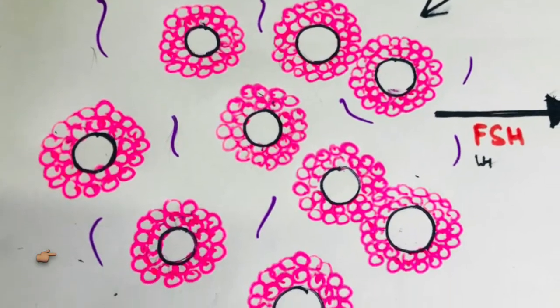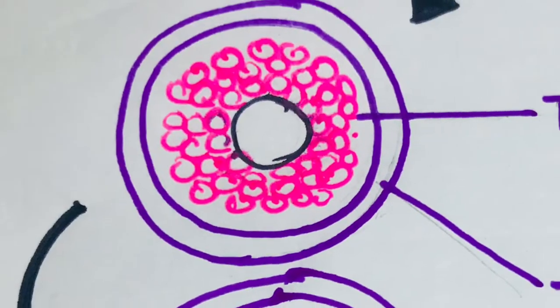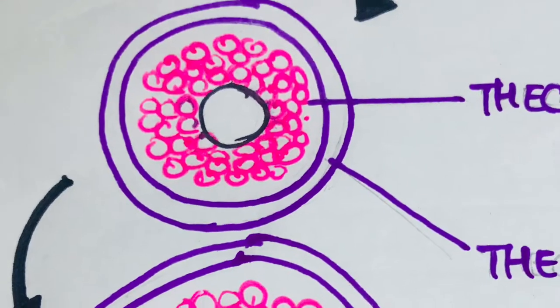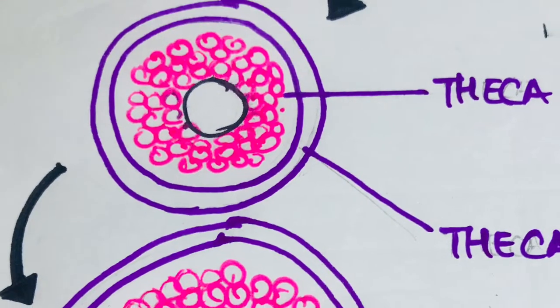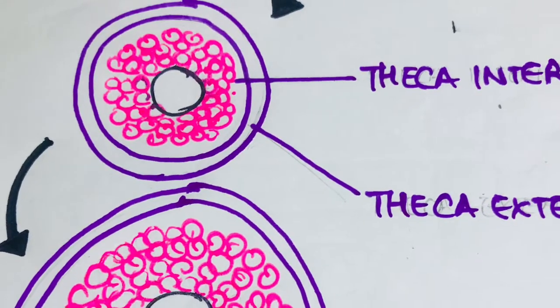These spindle cells collect outside the granulosa cells, giving rise to a second mass of cells called theca. This theca is divided into two layers: the theca interna and theca externa. I'll just quickly tell you the function of the two.